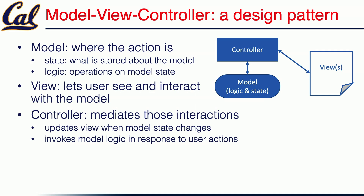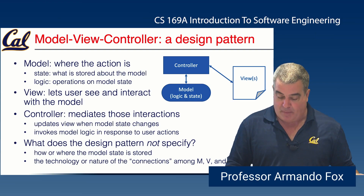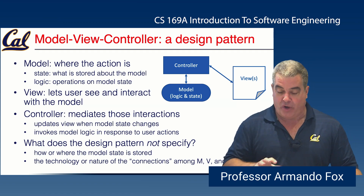The controller mediates interactions between the view and the model logic. For example, the controller might update the view when the state of the model has changed in some interesting way. Or, if the user does something to stimulate the model, the controller figures out what the user did and translates that into calls to operations on the model logic. Now, this is a structural pattern, which means it doesn't say anything about how or where the model state is stored, or the technology used, or the nature of the connections among the model, view, and controller. It's just a way of thinking about how to organize the things in the app.